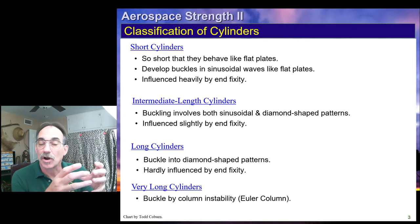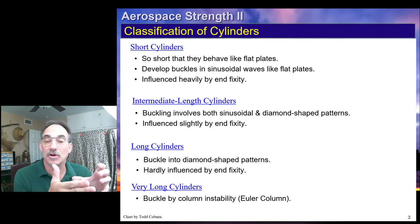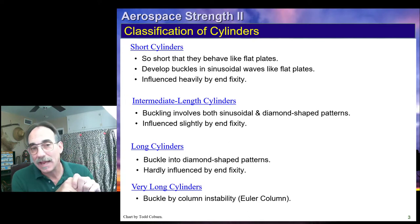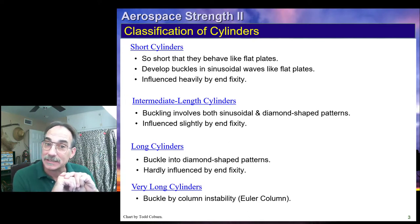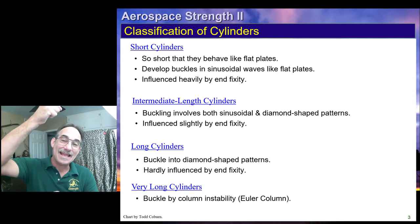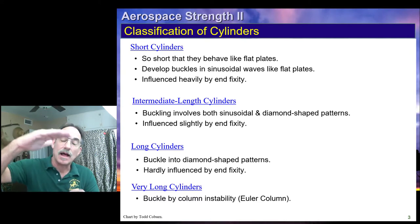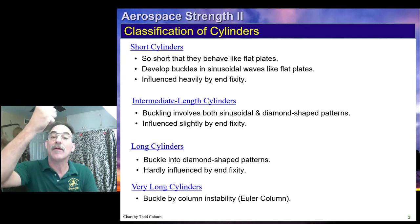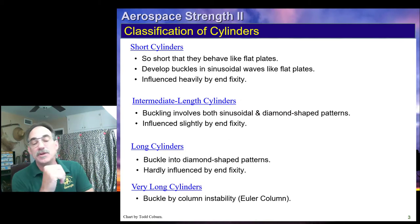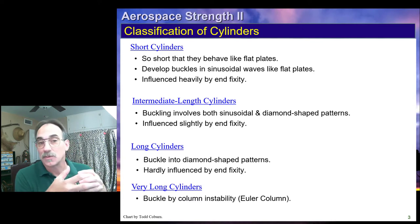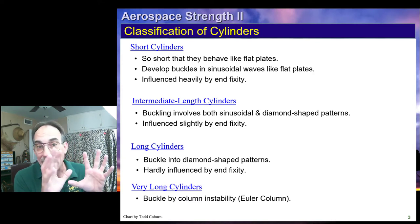Short cylinders are so short that the curvature looks really large relative to the length, and these tend to behave kind of like flat plates. If they're super long, the out-of-plane bending stiffness will be lower than the buckling effects of the cylinder itself, meaning they will behave like an Euler column. Anywhere in between, we get various levels of combined effects where we see a sinusoidal pattern.